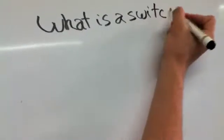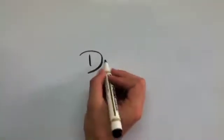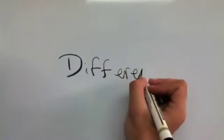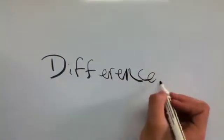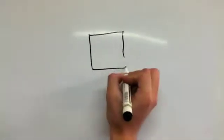Now I'm going to explain what a switch. A switch, however, keeps a record of the MAC addresses of all the devices connected to it. With this information, a switch can identify which system is sitting on which port. So when a frame is received, it knows exactly which port to send it to, without significantly increasing network response times.